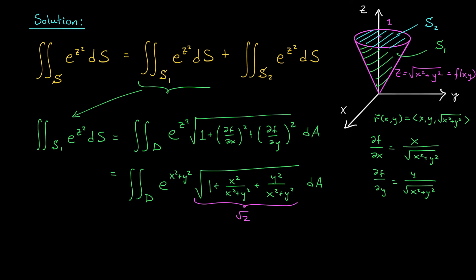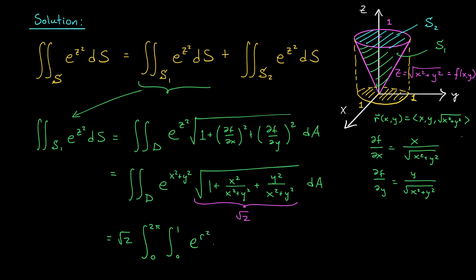We now have to figure out the bounds on this integral. Our surface S1 will have x and y values throughout this circle — the circle we get by projecting our surface down onto the xy plane, which is the same circle from intersecting the cone with the plane z equals 1. Since z equals 1, this is actually the unit circle x squared plus y squared equals 1. So it makes the most sense to write our integral over the unit circle in polar coordinates. Pulling root 2 out front, we get root 2 times the integral from 0 to 2 pi, the integral from 0 to 1, of e to the r squared, times r dr d theta. Evaluating with a quick substitution gives a final answer for this first surface integral of root 2 pi times (e minus 1).